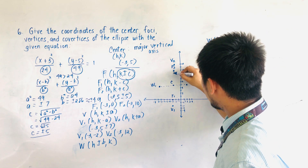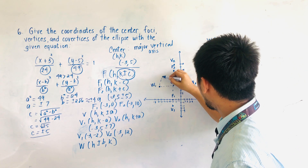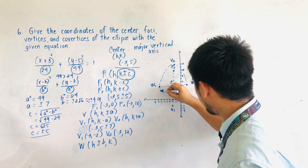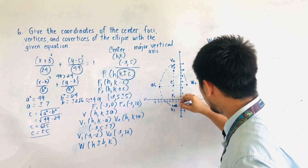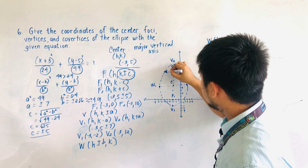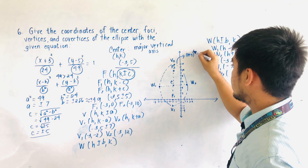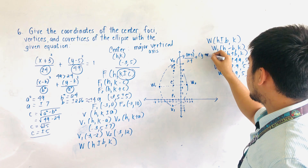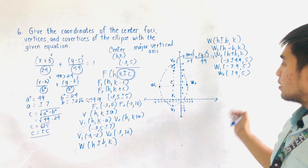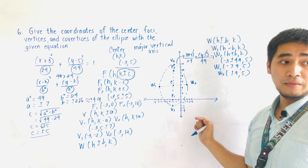This is now our ellipse — this is the graph of the given ellipse. The equation is x plus 3, quantity squared, over 24, plus y minus 5, quantity squared, over 49, equals 1. Remember that this ellipse contains a major vertical axis.